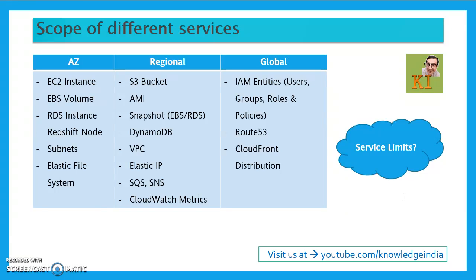A VPC exists within a region, whereas the various subnets within a VPC have the scope of an availability zone. Elastic File System — though created at the region level — has a specific endpoint available in every AZ. Redshift nodes each reside in one availability zone. Elastic IPs are regional and not bound to any availability zone. SQS and SNS are also regional services — anything written to SQS or SNS gets copied to multiple availability zones automatically.